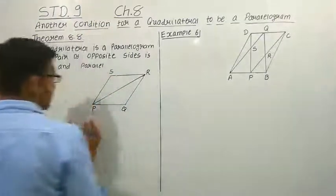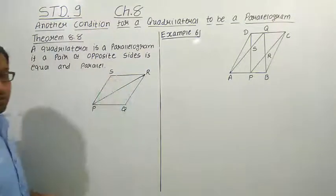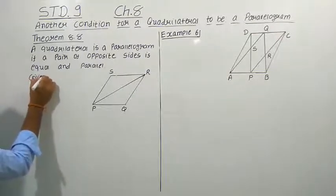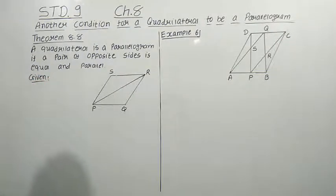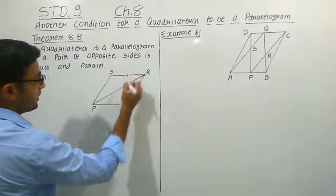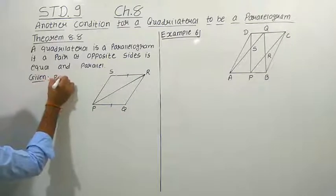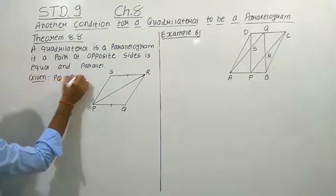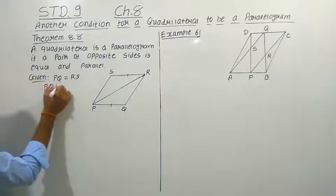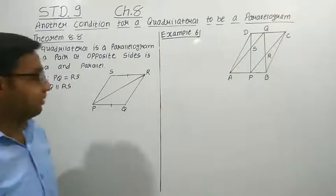Let us take a quadrilateral PQRS. The given condition is that one pair of opposite sides is equal and parallel. We are taking that RS side is equal to PQ side, so PQ is equal to RS. Also, PQ is parallel to RS. These two things are given.